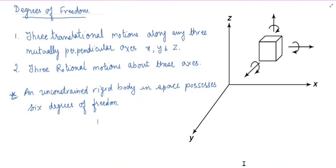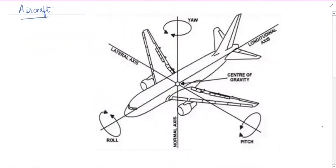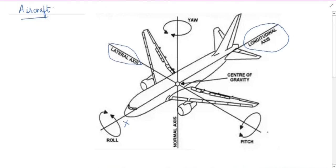Let us now understand this with an example of an aeroplane. Consider an aircraft as a rigid body in space. As we can see from this figure, it has three axes: the longitudinal axis, which we consider as our x-axis; the lateral axis, which we take as the y-axis; and the normal axis, which we consider as the z-axis. This aircraft can move forward or rearward along the longitudinal axis, and this translational motion along the longitudinal axis is known as surging.